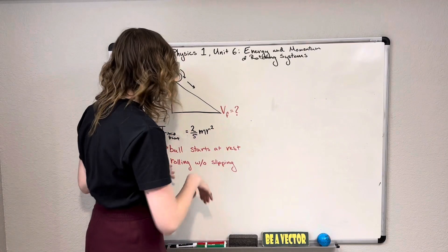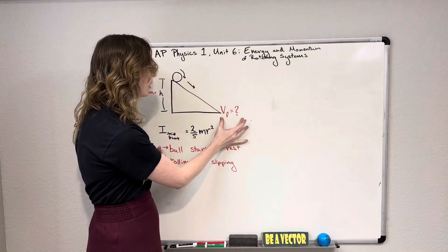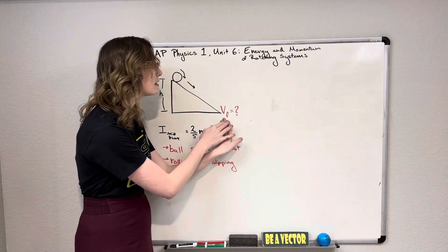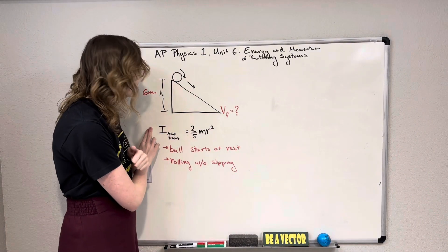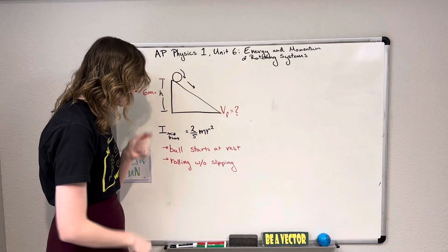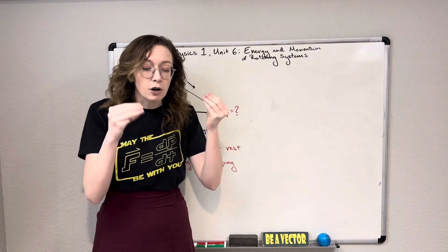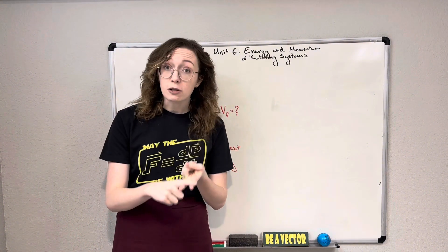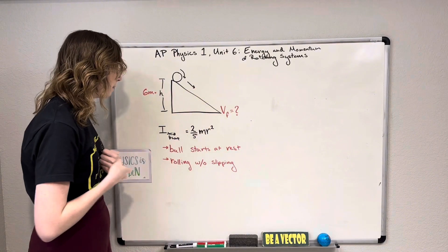We have a ball rolling down a ramp and we're given a few pieces of information. First, we're looking for the final velocity of the ball when it reaches the bottom of the ramp. We're told the moment of inertia of a solid sphere is (2/5)mr². The ball starts at rest, so our initial velocity is zero, and our initial momentum and kinetic energy are also zero.